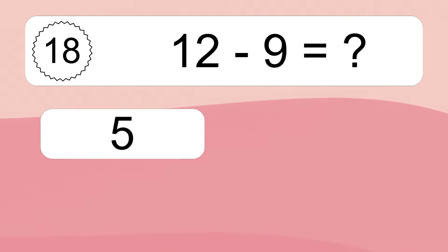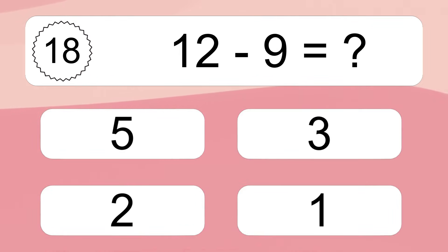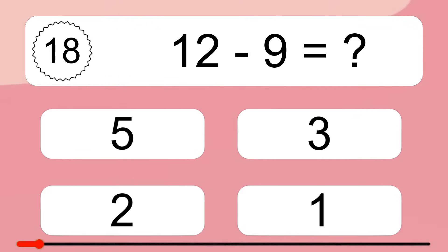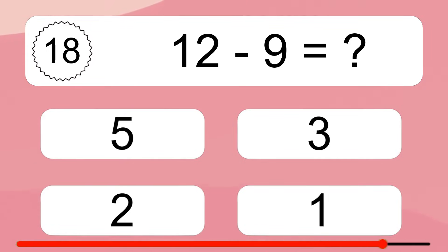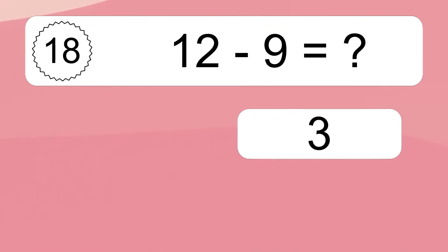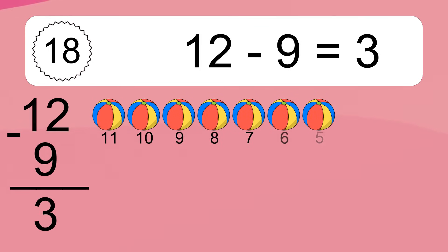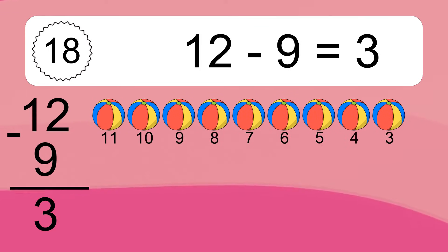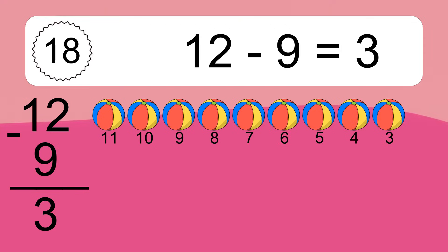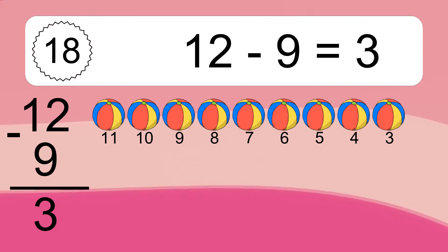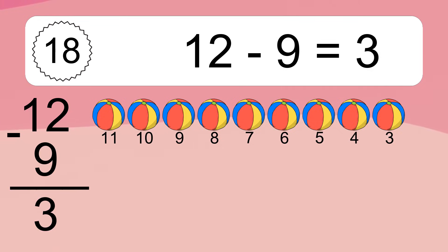12 minus 9 equals what? 12 minus 9 equals 3. Let's count it: 11, 10, 9, 8, 7, 6, 5, 4, 3.